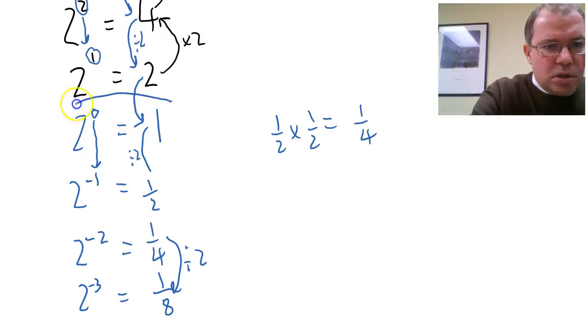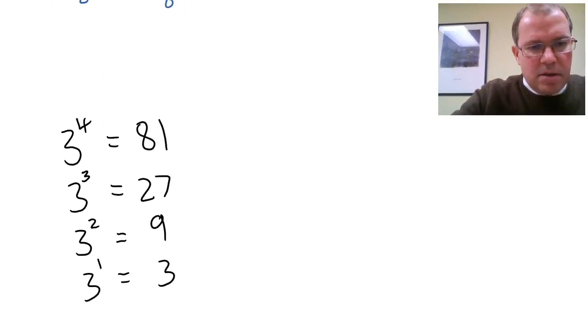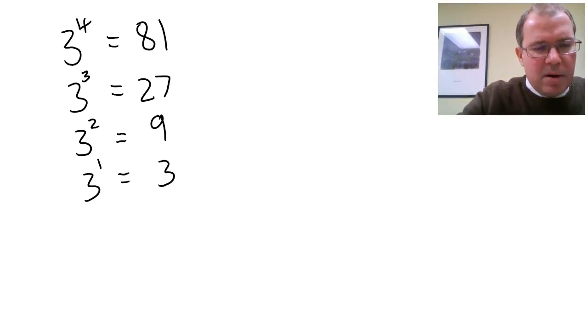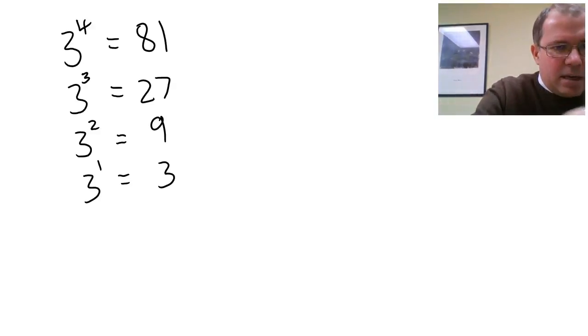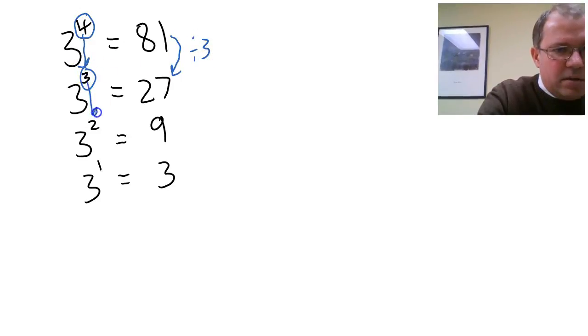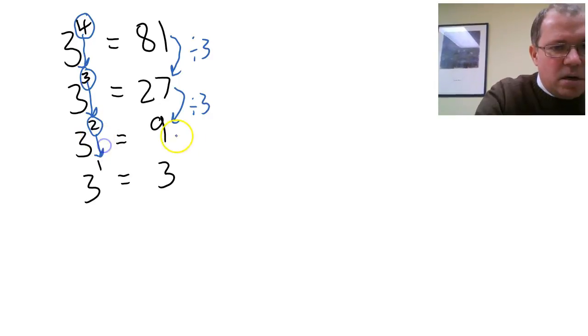Now notice that 2 to the power of 0 is 1. Now I want to consider the 3 to the power. Let's do the same thing. As the 4 decreases to 3, we divide by 3. As the 3 decreases to 2, we divide by 3. As the 2 decreases to 1, we divide by 3.